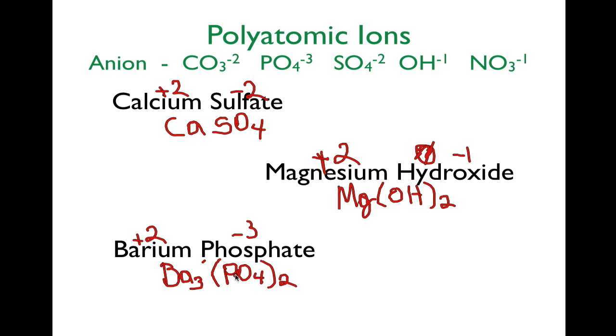And again, you need to be able to kind of recognize when you have a polyatomic ion. This is not sulfide. This is not phosphide. This is a sulfate and a phosphate, and this is the chemical formula for those polyatomic ions.